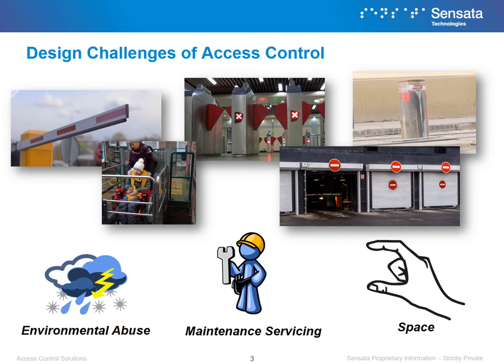Access control systems take a beating. They need to endure constant human usage as well as survive demanding outdoor environments. Additionally, maintenance is becoming a larger concern as many of these applications need to work remotely with limited tech staff on call. Breakdown can lead to a loss of business or even a complete stoppage of transportation routes. Newer designs are demanding components that can withstand the abuse of constant usage and the battering of the environment, all while extending current cycle life norms.